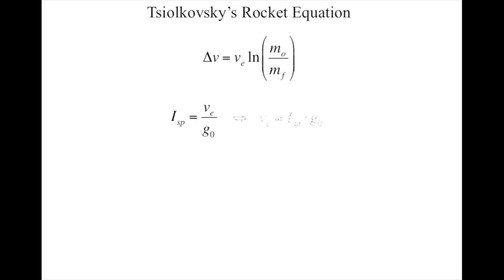Anyway, a little rearranging gets VE equals ISP times G0, and substituting gets us this more useful form of the rocket equation.